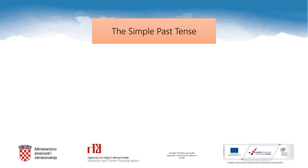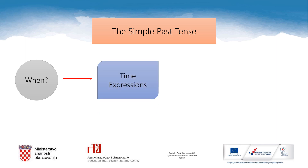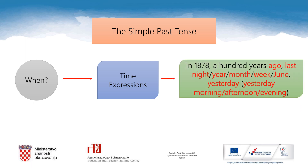Simple past tense je prošlo svršeno glagolsko vrijeme i točno znamo kada se radnja dogodila u prošlosti. Da bismo odredili vrijeme radnje, služe nam vremenske izrazi ili time expressions. Možemo kazati koje se godine radnja dogodila, na primjer in 1878. Možemo koristiti riječ 'ago' kako bismo rekli prije koliko se godina radnja dogodila. Ili možemo reći last night, last year, last month, last week, last June. I možemo koristiti riječ 'yesterday' — na primjer yesterday morning, yesterday afternoon, yesterday evening.